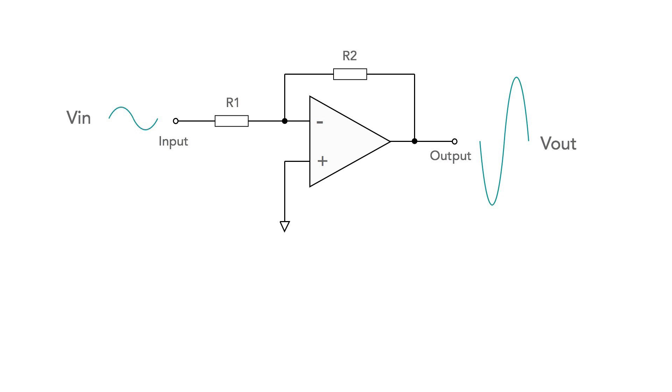The voltage gain for this circuit can be easily calculated as it is simply R2 upon R1, but notice the negative sign because it is an inverting amplifier. Let's take a look at a simple example of calculating the gain.